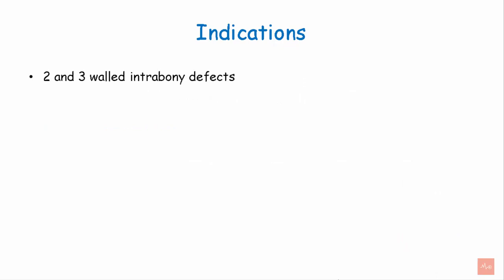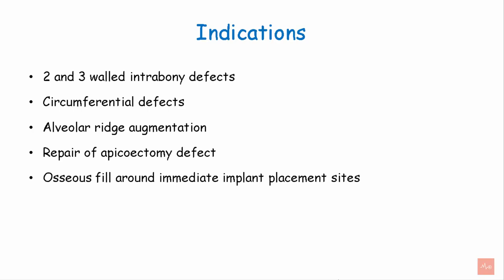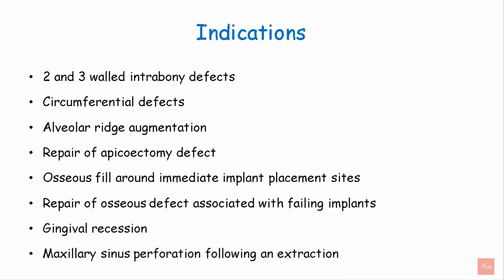The indications of guided tissue regeneration include: two and three wall infra-bony defects, circumferential defects around spiral pockets, alveolar ridge augmentation, repair of episectomy defect, osseous fill around immediate implants, repair of osseous defects associated with failing implants, treatment of gingival recession, and maxillary sinus perforation following an extraction.